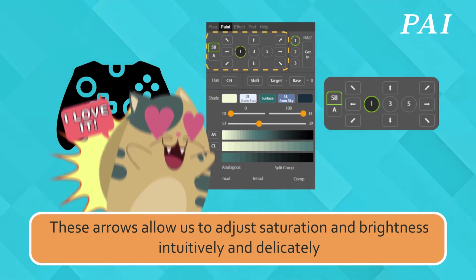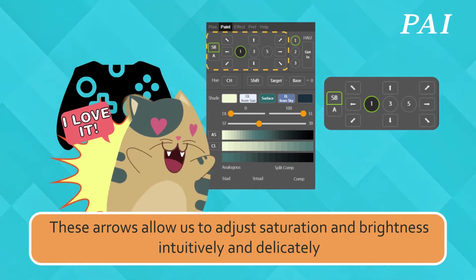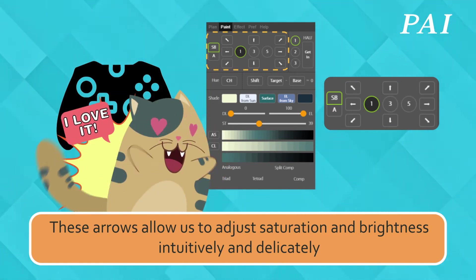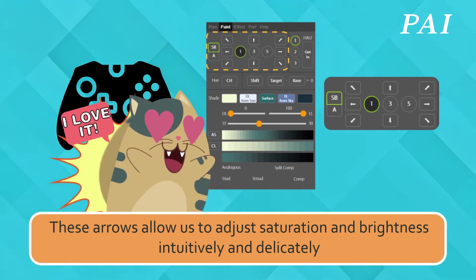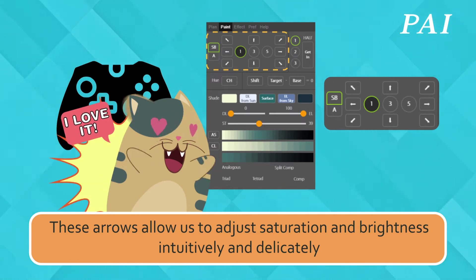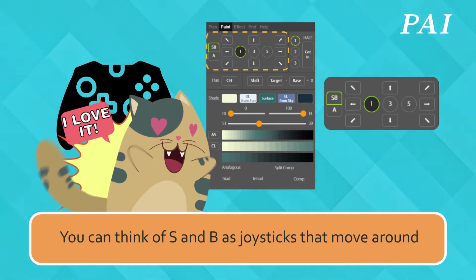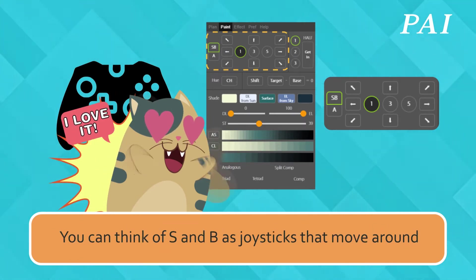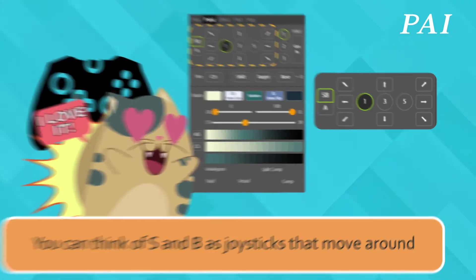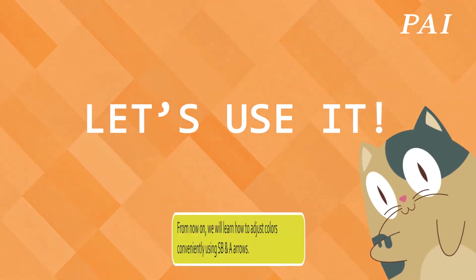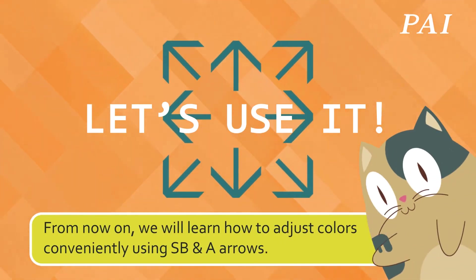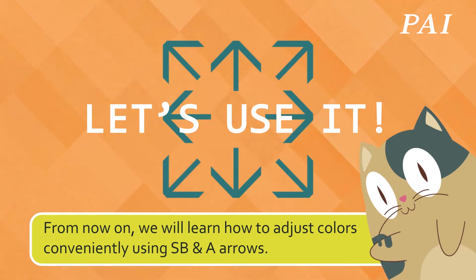These arrows allow us to adjust saturation and brightness intuitively and delicately. You can think of S and B as joysticks that move around. From now on, we will learn how to adjust colors conveniently using the S and B arrows.